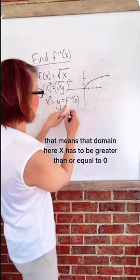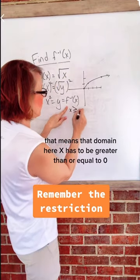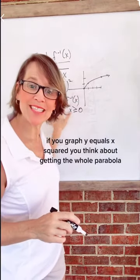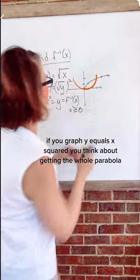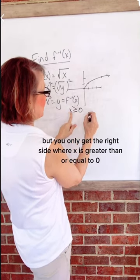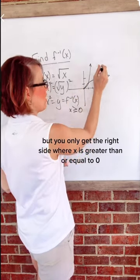That means the domain here, x has to be greater than or equal to zero. If you graph y equals x squared, you think about getting the whole parabola, but you only get the right side where x is greater than or equal to zero.